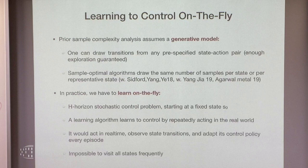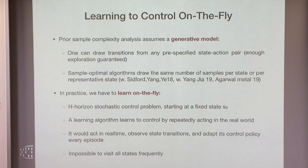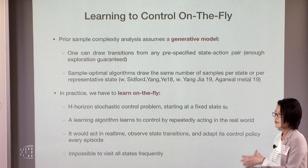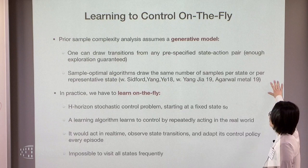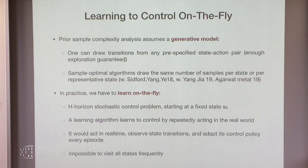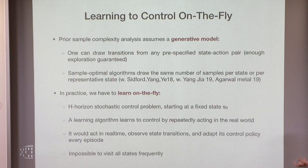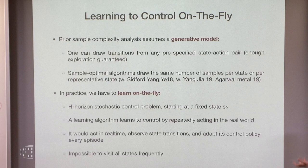Generative models are not practical enough, so we want to do better. A generative model means we have a perfect simulator of the game or system, allowing us to draw sample transitions from any pre-specified state-action pair — reasonable if we have a simulator. To get sample-optimal algorithms, the algorithms need to generate basically the same number of samples per representative state to ensure the estimated policy is well-controlled along every direction.